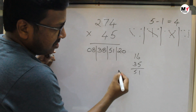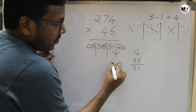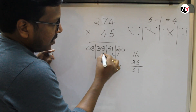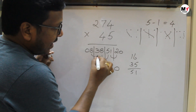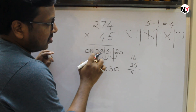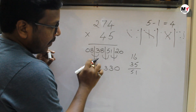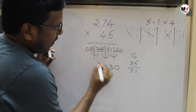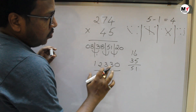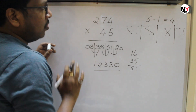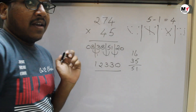Now balance it. Last digit 0 as it is. 1 plus 2 is 3. 8 plus 5 is 13 — so write 3 and carry 1. 8 plus 3 plus 1 carry is 12 — write 2 and carry 1. So the answer for 274 multiplied by 45 is 12,330.